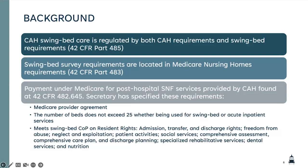Medicare and payment under Medicare for post-hospital SNF services provided by a critical access hospital require three things: they have to have a Medicare provider agreement, they have to have a number of beds not exceeding 25, and they must meet the swing bed conditions of participation around various patient rights — admission, transfer, and discharge; freedom from abuse, neglect, and exploitation; patient activity; social service; comprehensive assessment; care plans; discharge planning; rehab services; dental; and nutrition. We are going to touch on many of these areas in the next several slides.